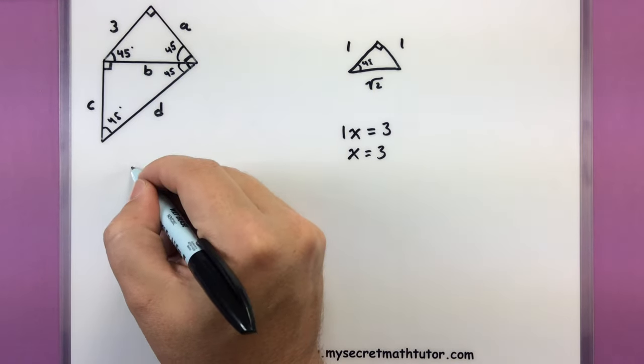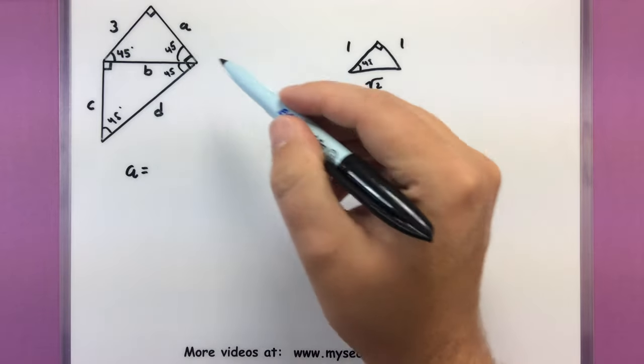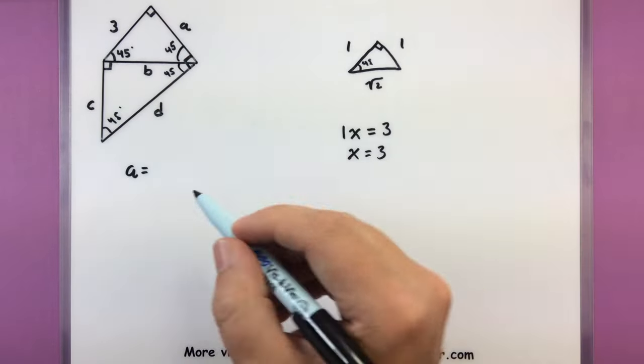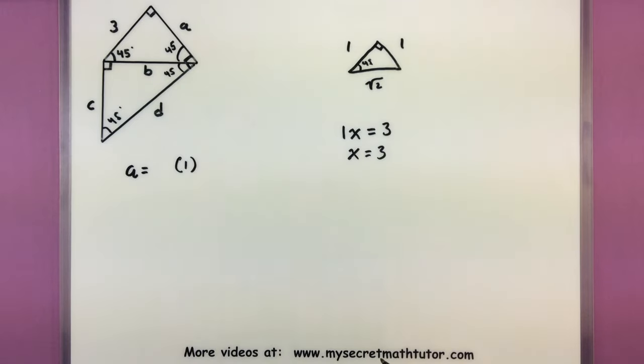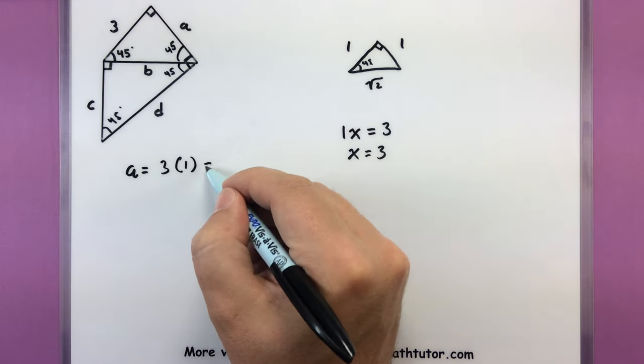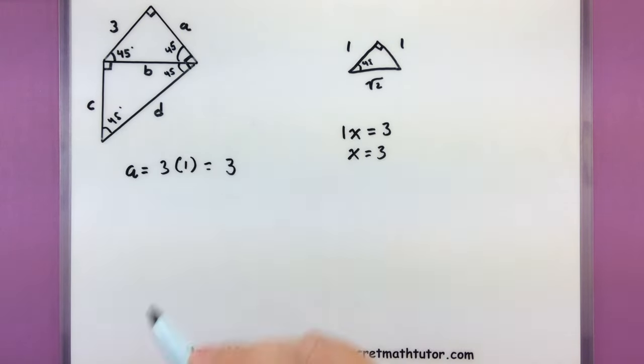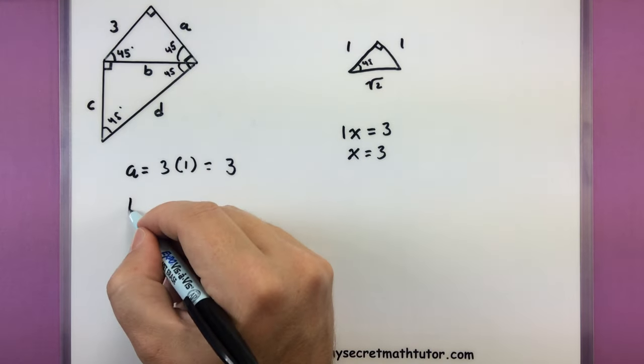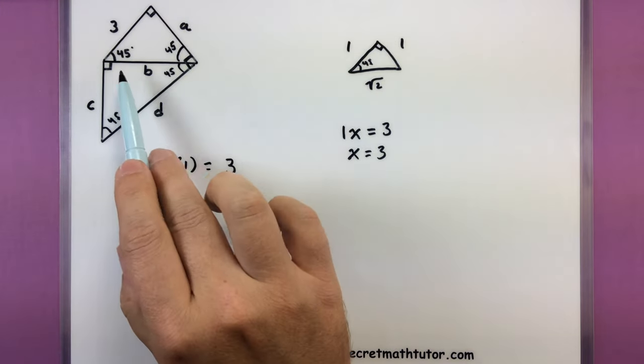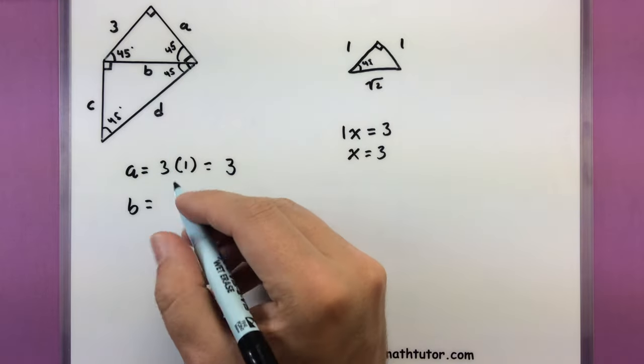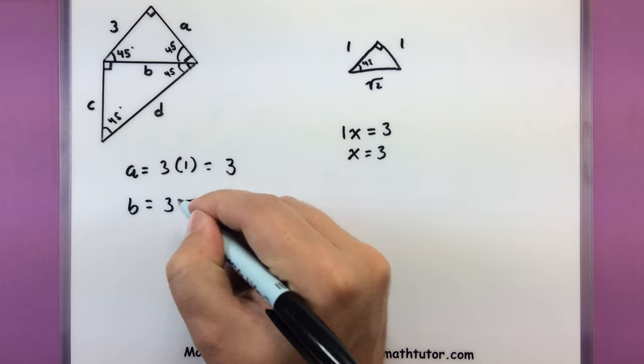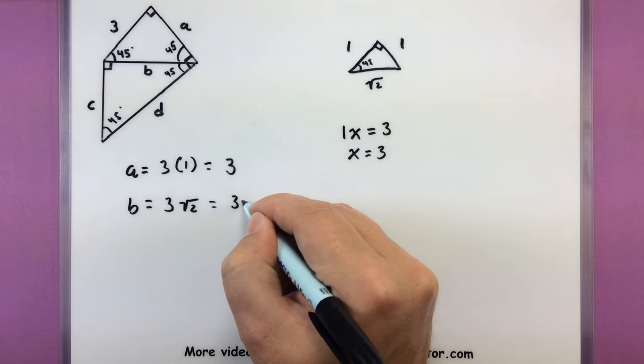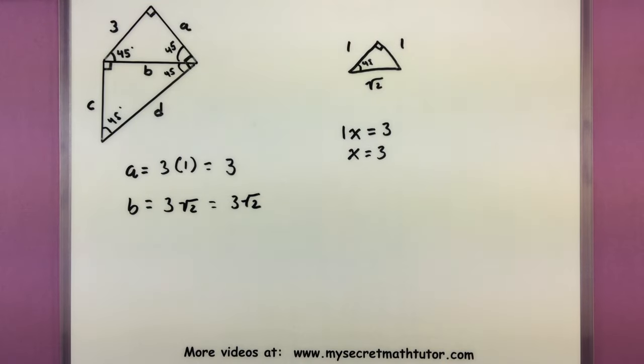Let's go ahead and start with A. So A is this side right here. So it's normally 1. So I'm going to take 1, multiply it by our scaling factor, and now I know A is 3. B is this long side along the bottom, so it's normally the square root of 2. Multiply it by a scaling factor, 3, square root of 2. Alright, not bad. Moving on, let's see what we got now. Let's go ahead and do C.